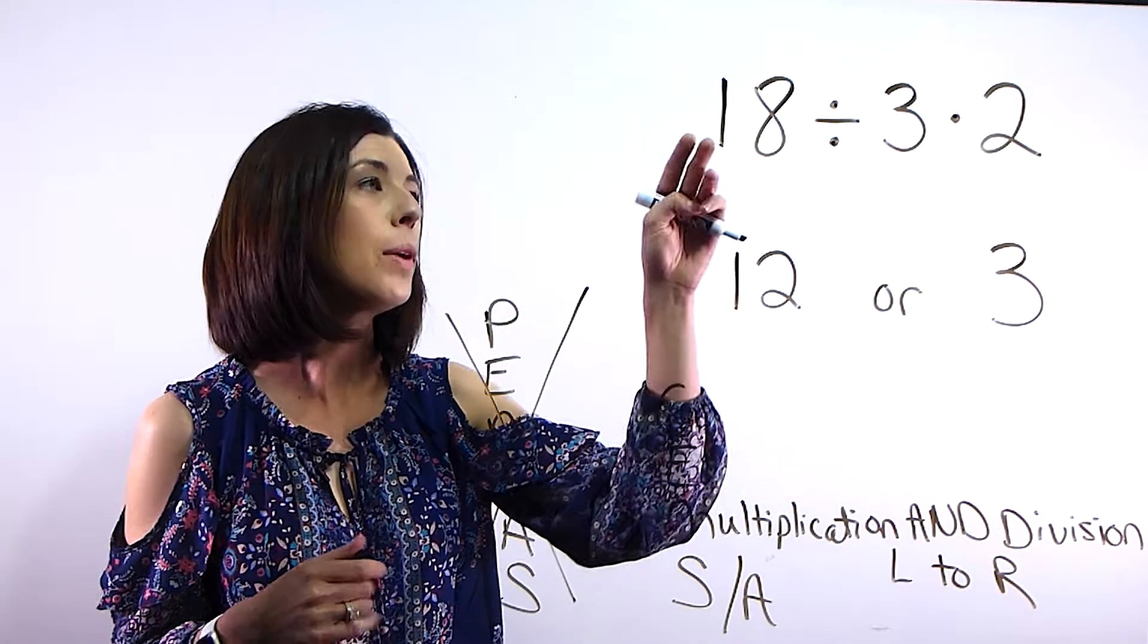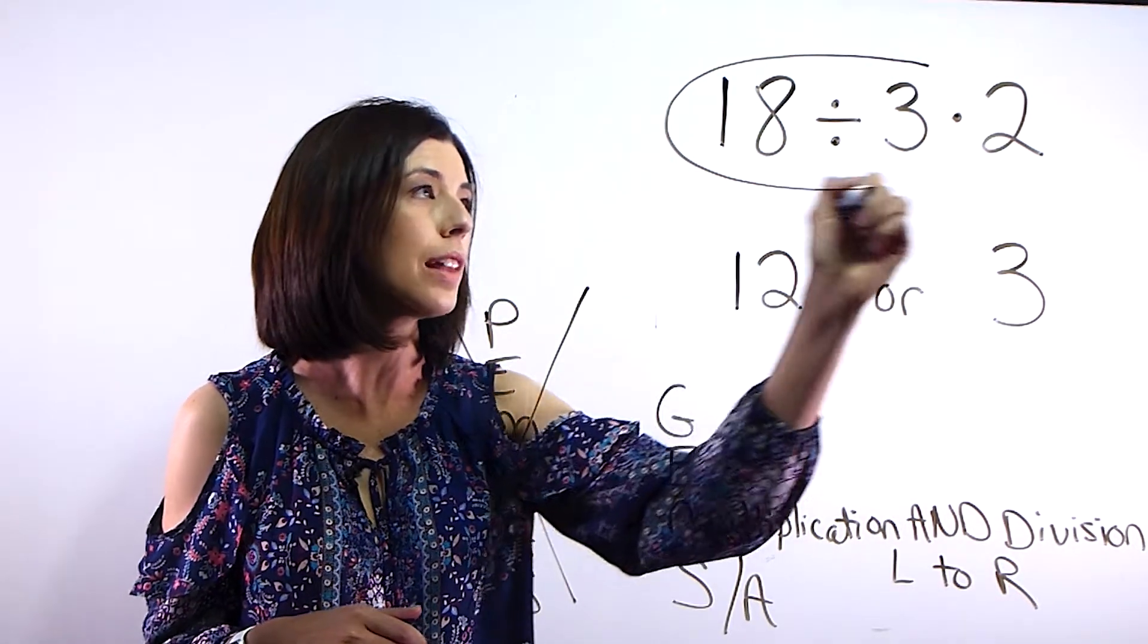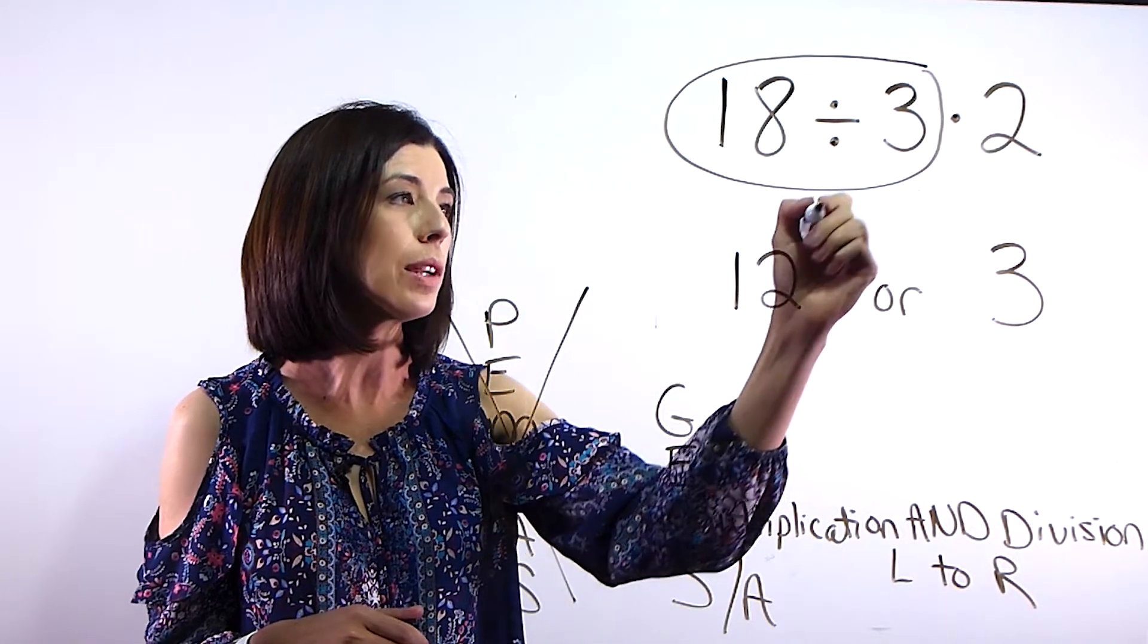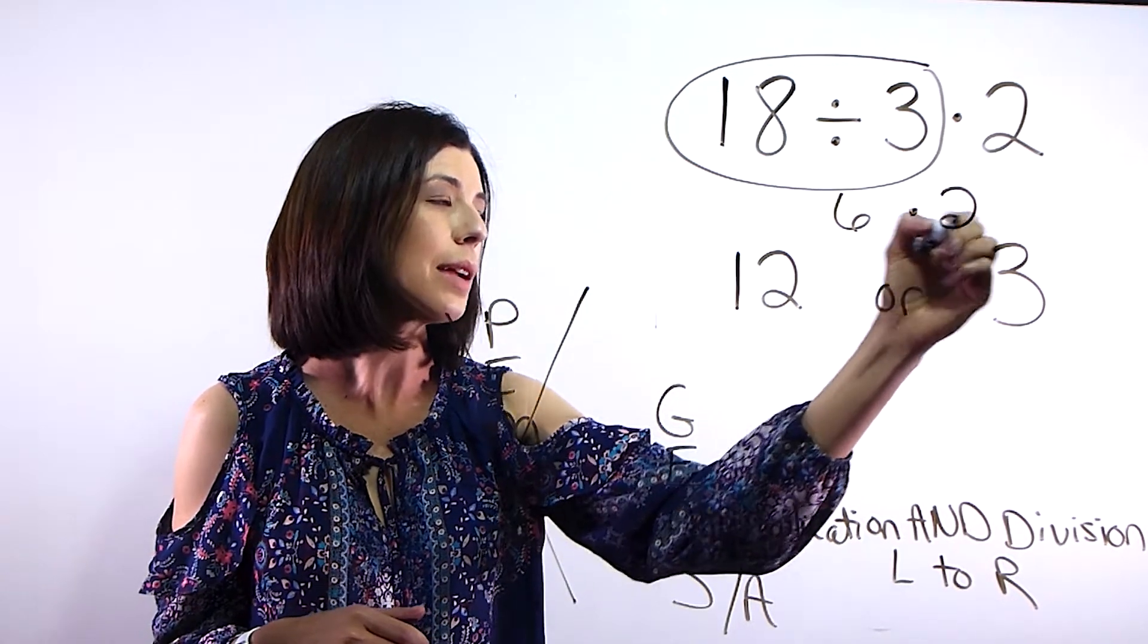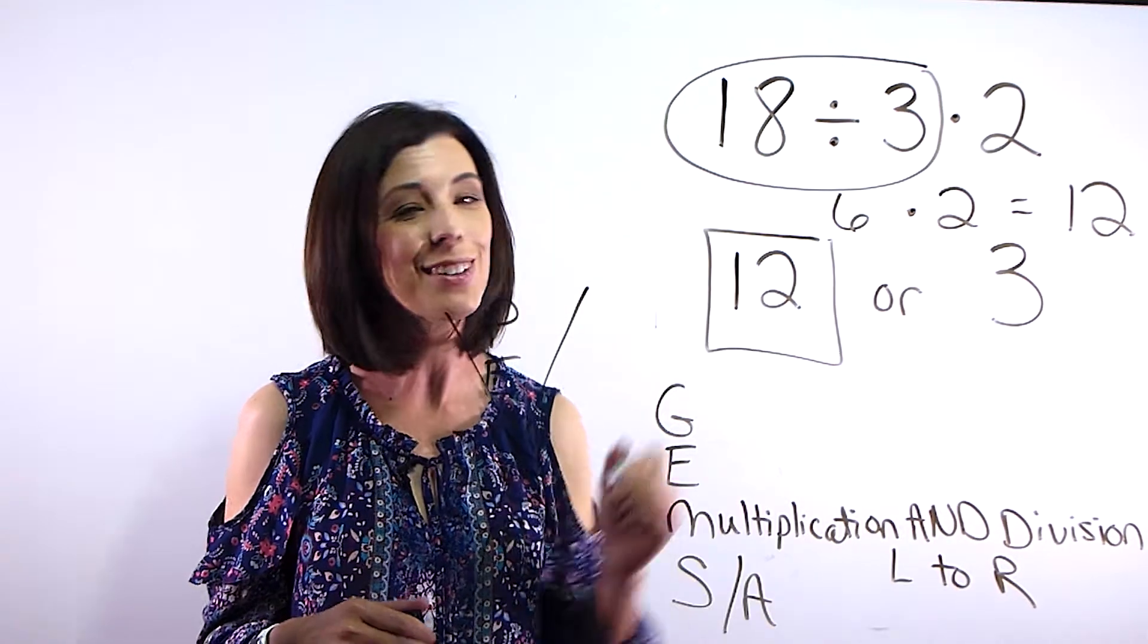So in this problem, we're actually not going to multiply 3 times 2 first. We are going to start on the left. And our leftmost operation is going to be 18 divided by 3, which is 6. 6 times 2 equals 12. So my correct answer is going to be 12.